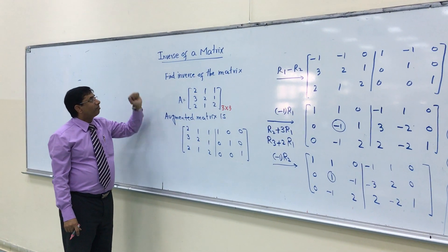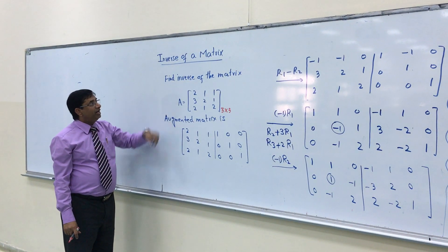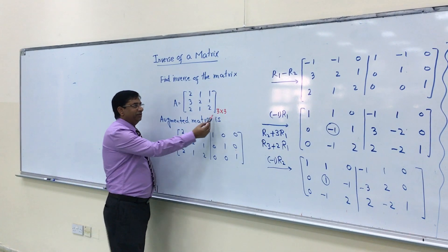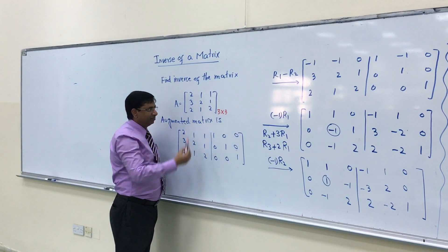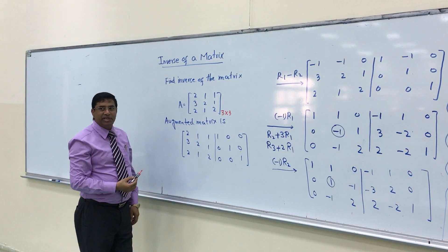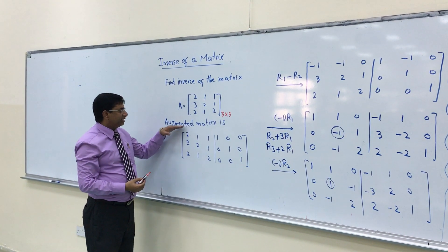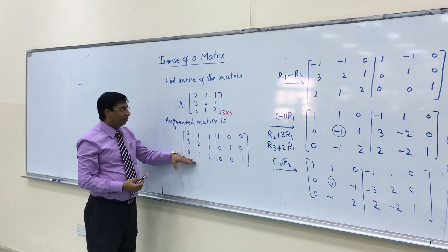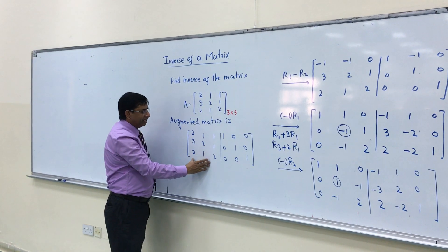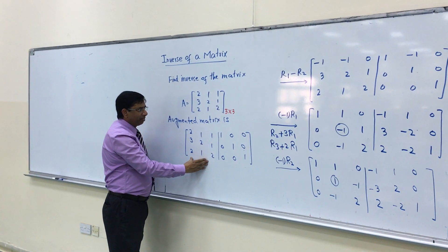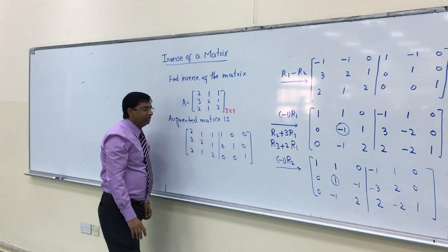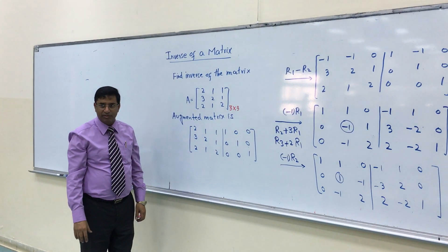Inverse of a matrix. Find the inverse of a matrix of order 3 by 3 — 3 rows and 3 columns. For finding the inverse of this matrix, we write it as an augmented matrix form. It means the same matrix entries, and here we put along with a unit matrix of the same order.